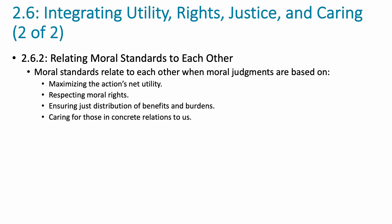Wrapping up how we integrate all those different theories — they do relate to each other in many ways. Our moral standards need to include all four elements: net utility, respect for everybody's individual rights, just distribution of benefits and burdens, and caring for those in concrete relations to us. All four of those should be considered in the process. Some might get more weight than another, but they should all be part of that discussion and decision making process.